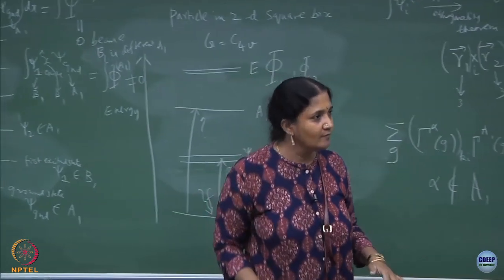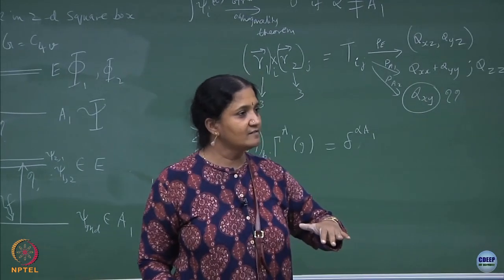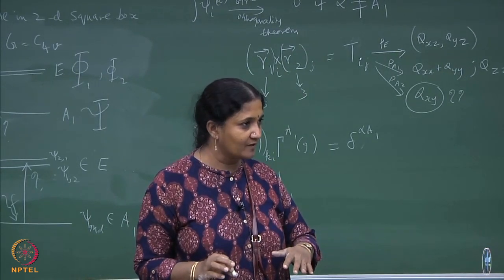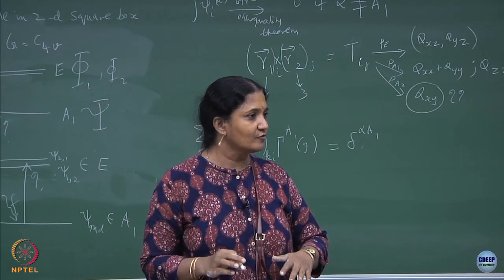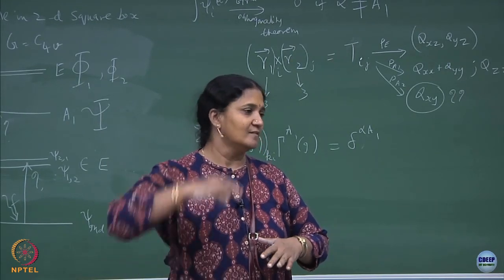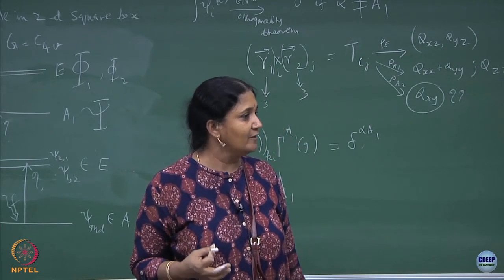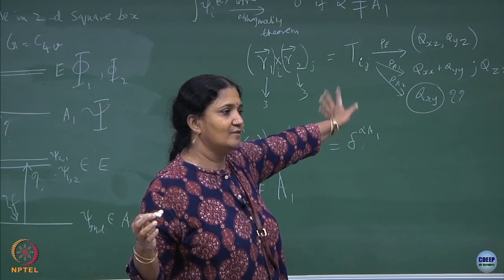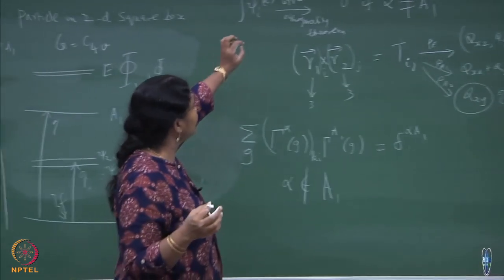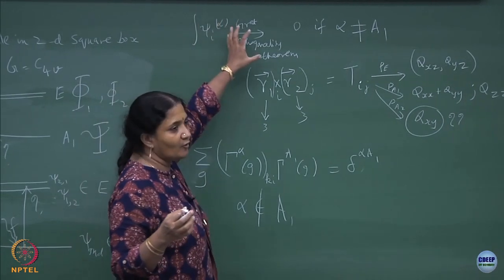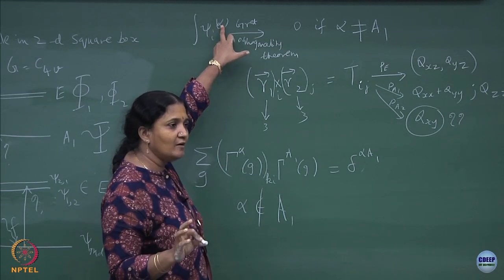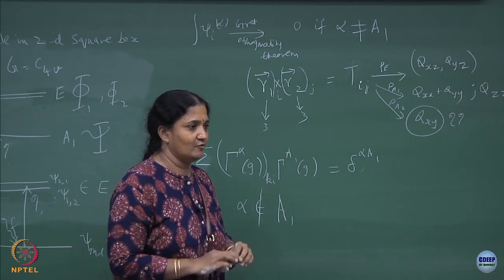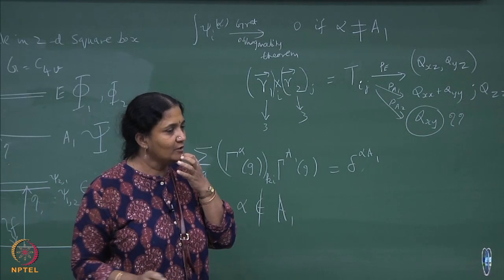B1 times B1 is A1, and A1 times A1 is A1. So essentially it will give you a piece which is A1, and by this argument it will be non-zero. What I have tried to prove is that there is a transition allowed to go from ground state to first excited state triggered by the x component of the dipole moment operator. But there is no transition possible to go from ground state to second excited state triggered by the dipole moment operator.